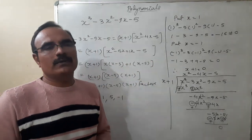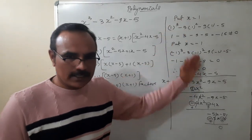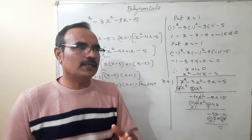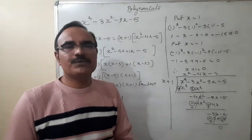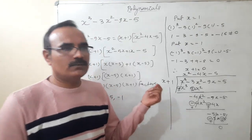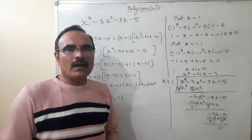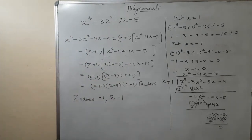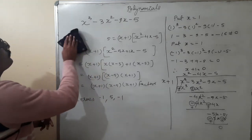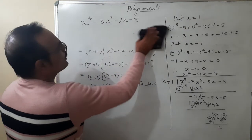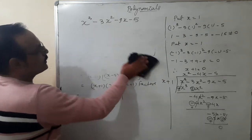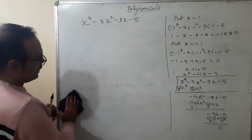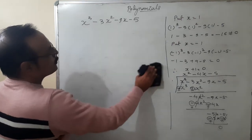This is the method for finding the zeros of any cubic polynomial using the trial and error method — start putting 1, minus 1, 2, minus 2, 3, minus 3. I think up to minus 3 we will get the zero. I have another method also, which I will tell you now. First we note that this cubic polynomial has four terms.